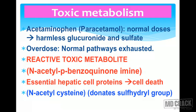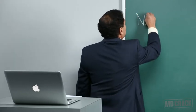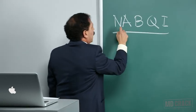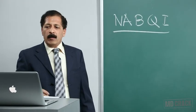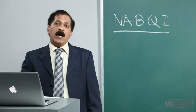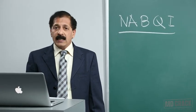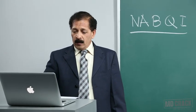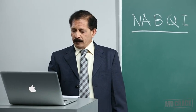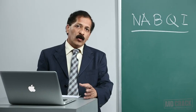The drug then follows an alternative metabolic pathway, producing a reactive toxic metabolite called N-acetyl-p-benzoquinone imine (NAPQI). This substance reacts with essential hepatic cell proteins and produces cell death and hepatic damage. The drug of choice for acetaminophen overdose is N-acetylcysteine, which donates sulfhydryl groups.